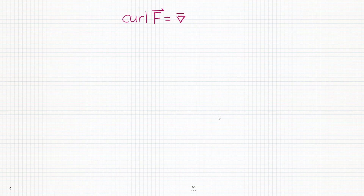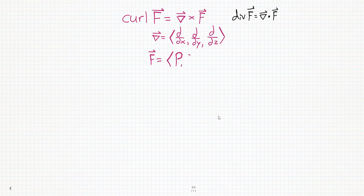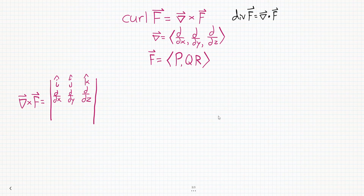Now let's look at the math. If we have a vector field F, then the curl of F is del crossed with F. This should remind you of the divergence, which is del dotted with F. Remember that del is a vector with an x component of partial derivative with respect to x, a y component partial with respect to y, and z component partial with respect to z. We'll say that the vector field F has components p, q, and r. So the curl of this vector field will be these two vectors crossed together.